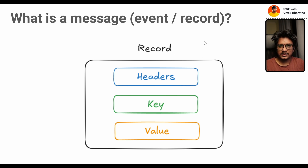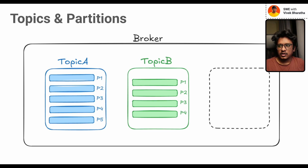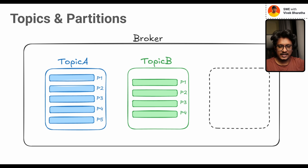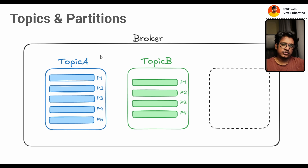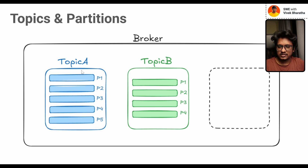Now let's move on to topics and partitions. What are topics? Topics you can treat as categories — like 'order created,' which can be treated as one topic; 'order updated,' 'order dispatched' — all these can be treated as categories. Each category can be referred to as a topic name. These topics act as a middleman between producers and consumers, where producers send messages to topics and consumers read data from these topics.